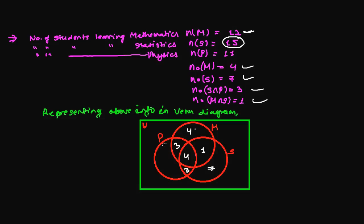For physics: the total is 11. We've covered 4 (all three), then 3 (math and physics only), then 3 (statistics and physics only), leaving 1. So 1 student learns physics only. Checking: 4+3+7 = 14, +1 = 15 ✓ for statistics; 4+4+1+3 = 12 ✓ for mathematics; 4+3+3+1 = 11 ✓ for physics.